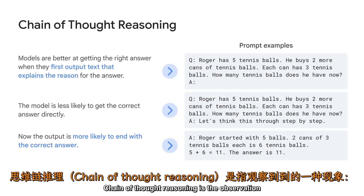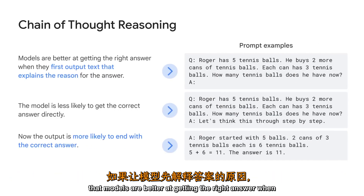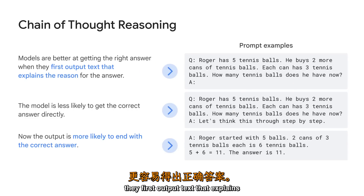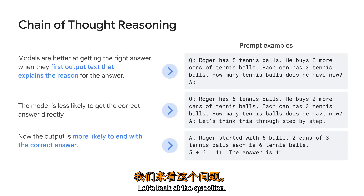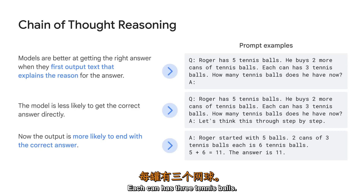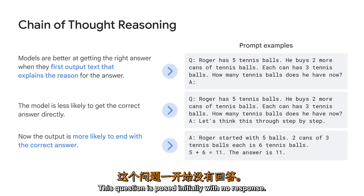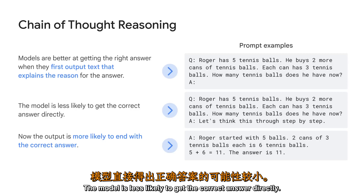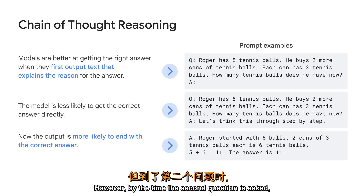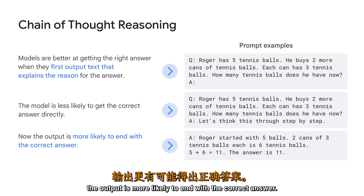Chain of thought reasoning is the observation that models are better at getting the right answer when they first output text that explains the reason for the answer. For example: Roger has five tennis balls, he buys two more cans of tennis balls, each can has three tennis balls — how many tennis balls does he have now? When this question is posed initially with no reasoning, the model is less likely to get the correct answer directly. However, by the time the second question is asked with reasoning steps, the output is more likely to end with the correct answer.